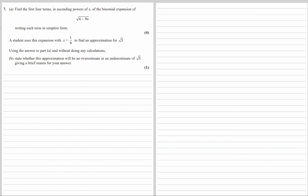Find the first four terms in ascending powers of x of the binomial expansion of the square root of 4 minus 9x, writing each term in its simplest form. We're going to change √(4 - 9x) into (4 - 9x) to the power of a half. When we do this binomial expansion, it needs to be in the form (1 + x)^n, so we need a 1 at the front.